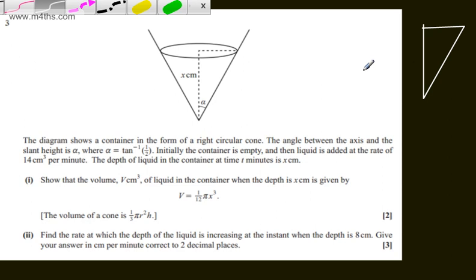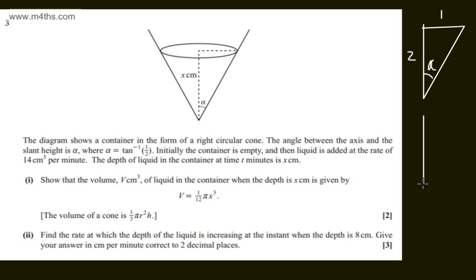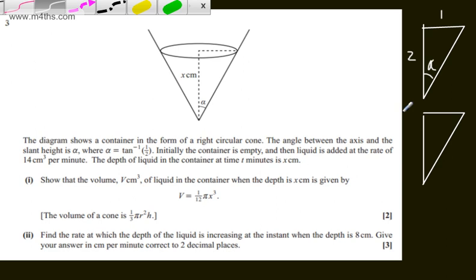If the inverse tan is equal to one half, we can say tan alpha is equal to one over two. So that's the opposite over the adjacent. So if I just apply this now to our particular scenario, we're going to have now the height of this cone as x, and then we will have this length, which becomes the radius of this circle, as one half x, or x over two.